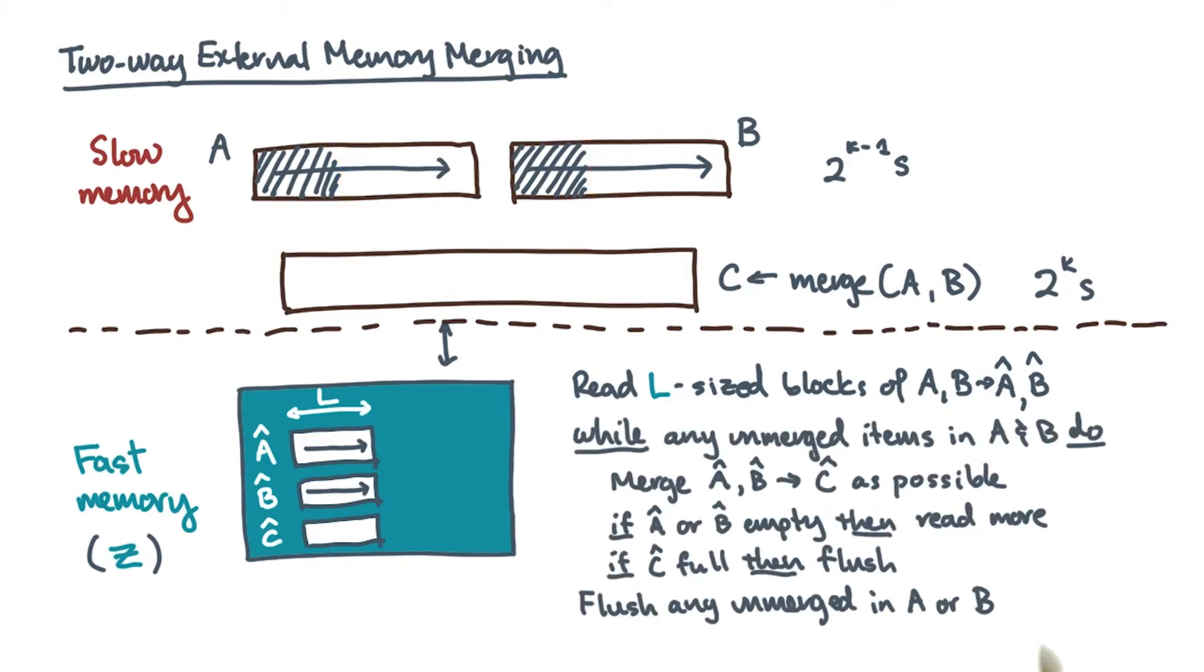Iterate until you've read all of A or all of B. Locally merge elements from A-hat and B-hat into C-hat. Do that until you run out of elements from A-hat or B-hat, or until you fill the output buffer C-hat.